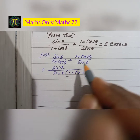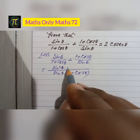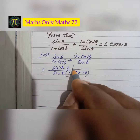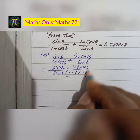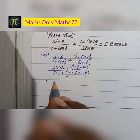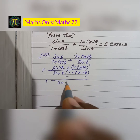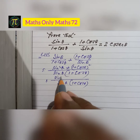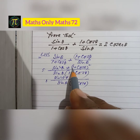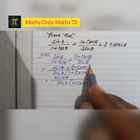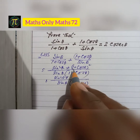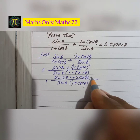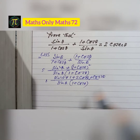The numerator becomes sin θ × sin θ, which is sin²θ, plus (1 + cos θ) × (1 + cos θ), which is (1 + cos θ)². Expanding (1 + cos θ)² using the identity (a + b)² = a² + 2ab + b².